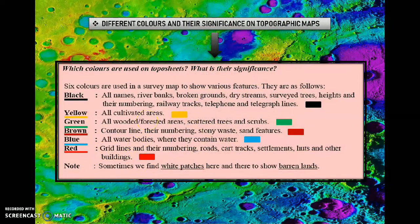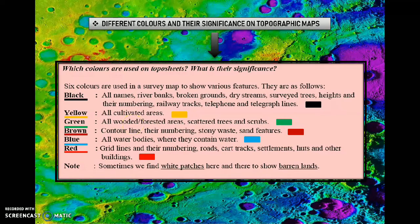Which colors are used on toposheets and what is their significance? We have already learnt about the colors used on topographical maps in short. Now I will discuss about these colors in detail. There are six major colors in a survey sheet which are important in topography.